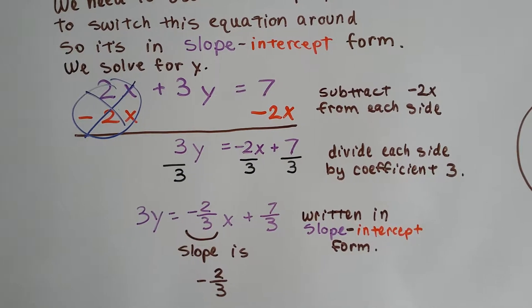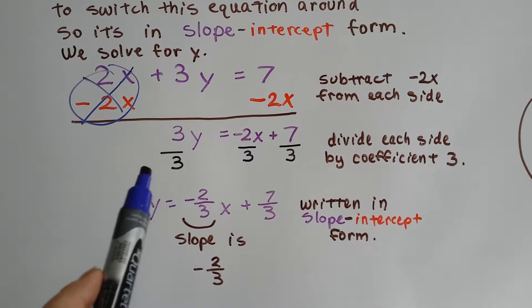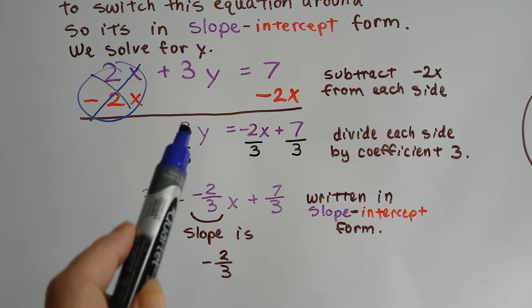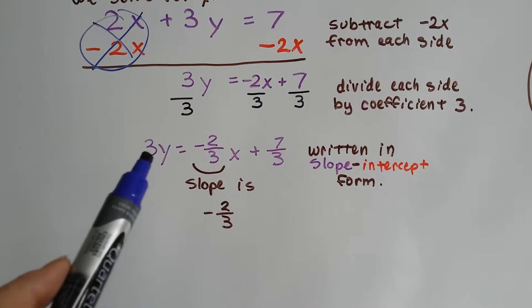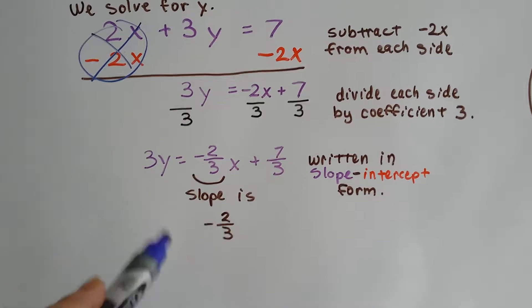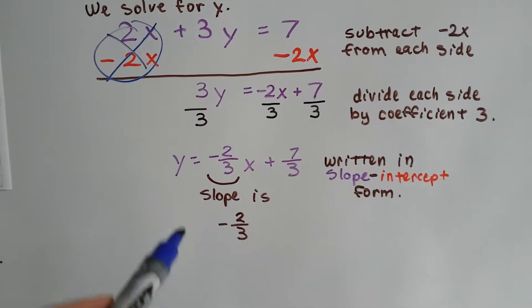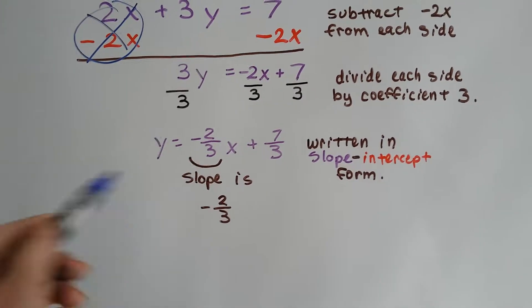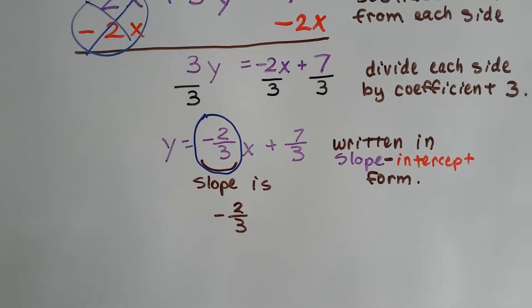Now, to isolate this y, we divide each of these terms by this coefficient 3 that gives us our friend the invisible 1, the identity property. So, that gives us y is equal to negative 2 thirds x plus 7 thirds. And we don't need to go any farther because this right here is our slope. It's negative 2 thirds.